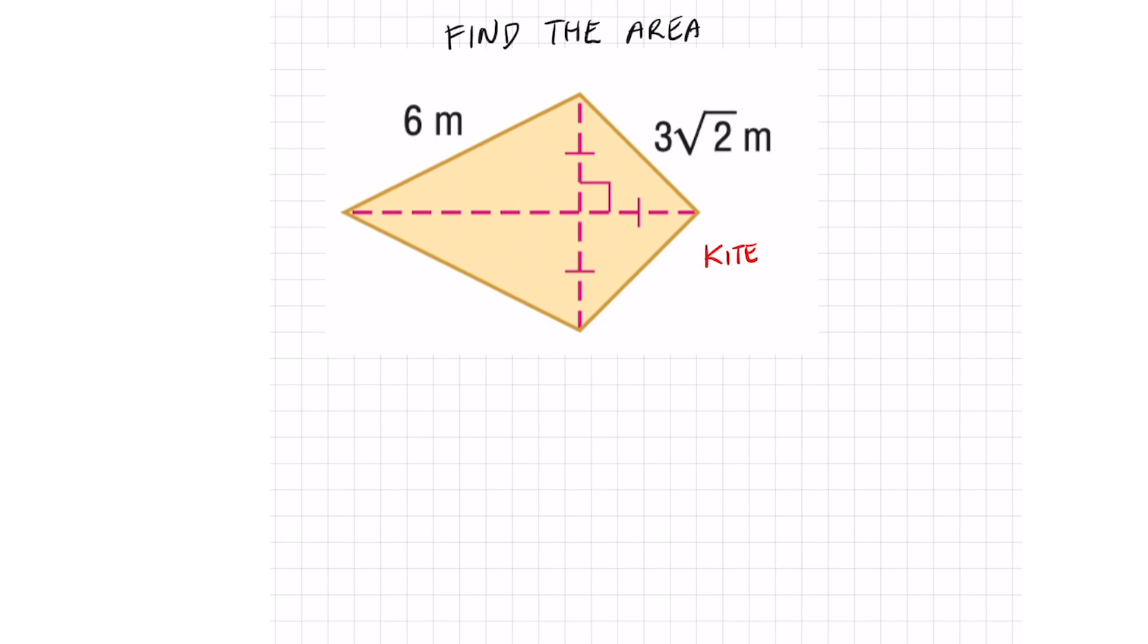And to find the area of a kite, it is just one half times diagonal one times diagonal two. It doesn't really matter which one of these you call your D1 or D2.